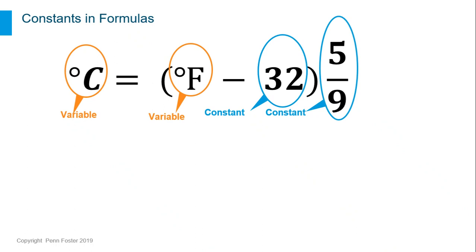The F and C are variables. The 32 and the 5 ninths are part of the formula, so they must stay there. They don't change.